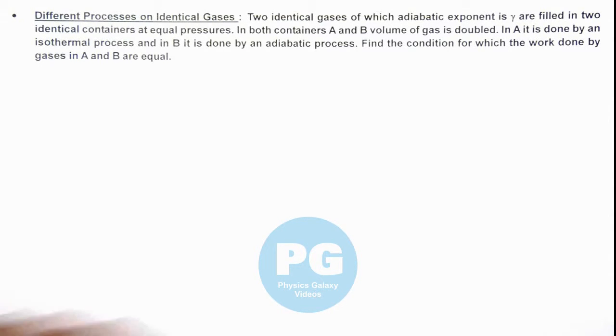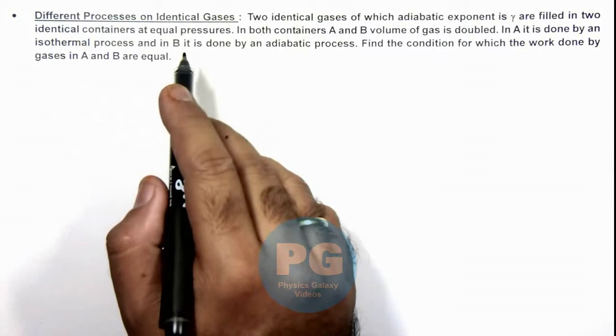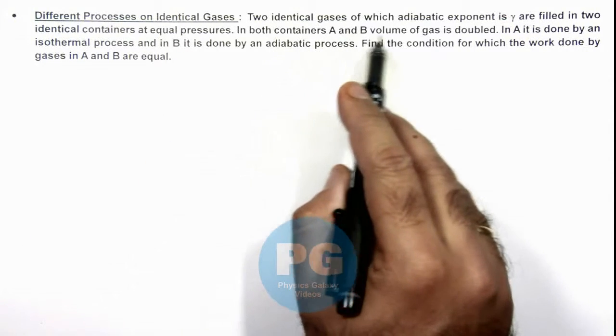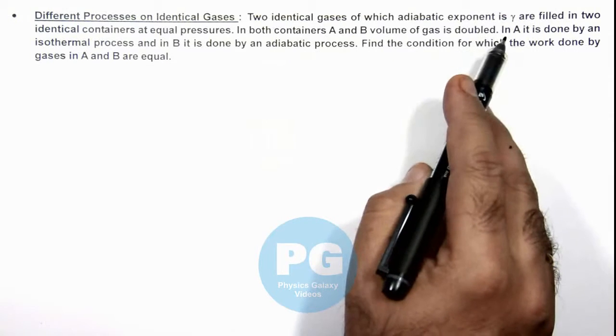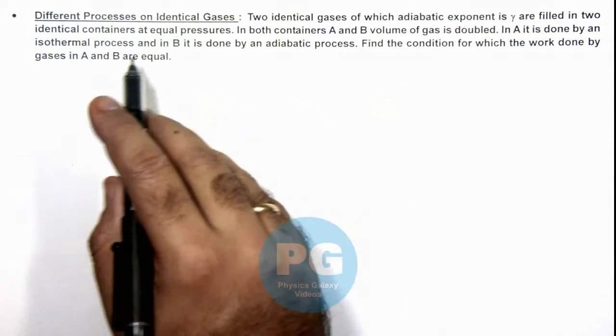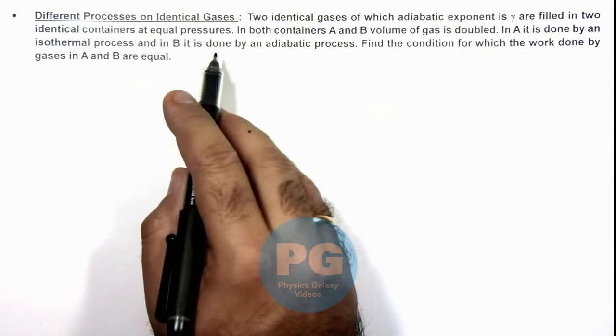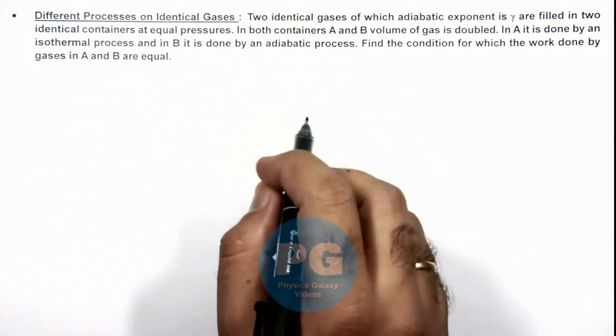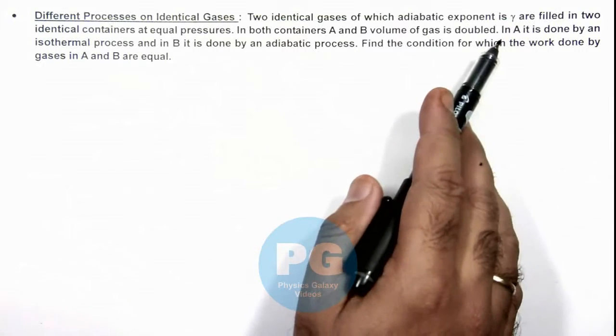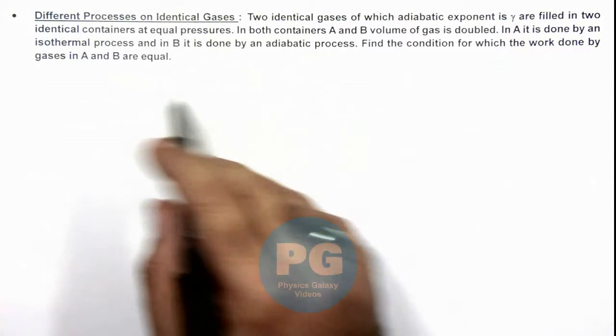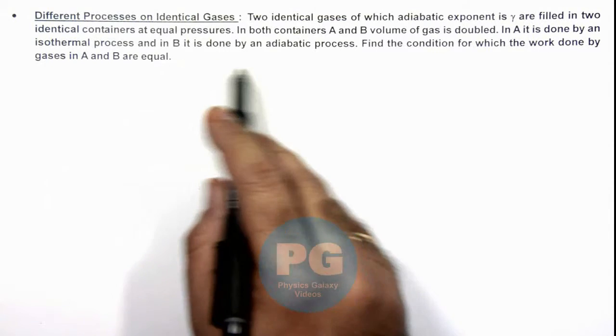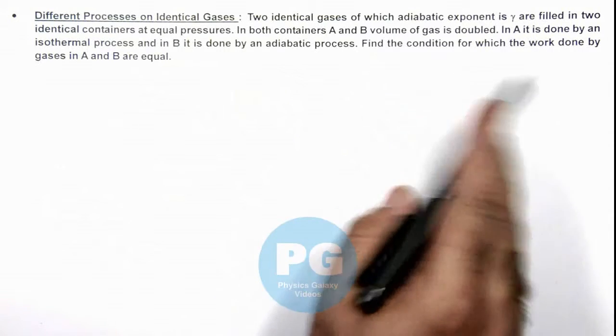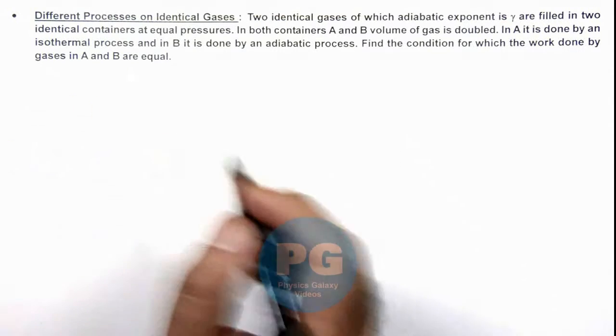In this illustration we'll study different processes on identical gases. Here we are given two identical gases of which adiabatic exponent is gamma, filled in two identical containers at equal pressures. In both containers A and B, volume of gas is doubled. In container A it is done by an isothermal process and in B it is done by an adiabatic process. We are required to find the condition for which the work done by gases in A and B are equal.